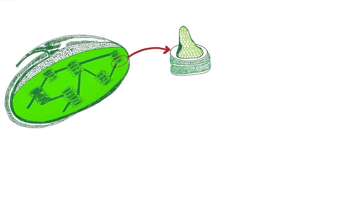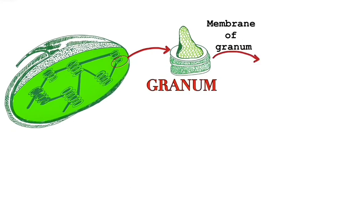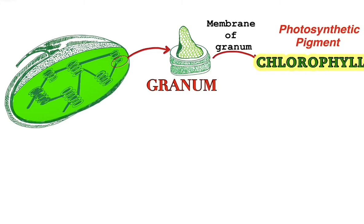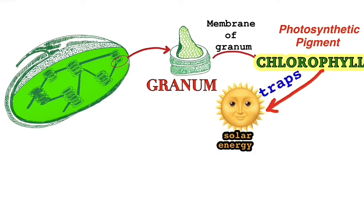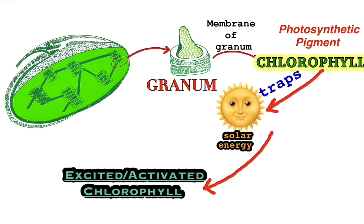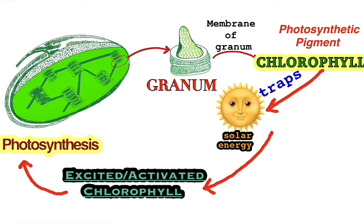Thylakoids are interconnected by membrane-bound channel-like structures called stroma lamella. In the membrane of each granum we can find the photosynthetic pigment called chlorophyll. Chlorophyll is called the photosynthetic pigment because it can trap solar energy. After it traps the solar energy, this chlorophyll gets activated or excited, and then it helps in the process of photosynthesis.